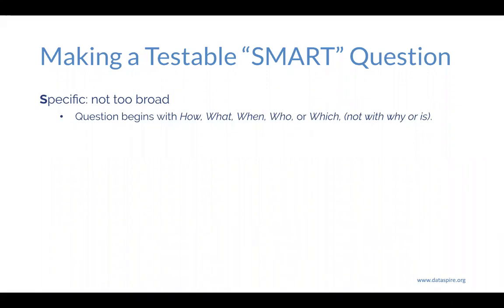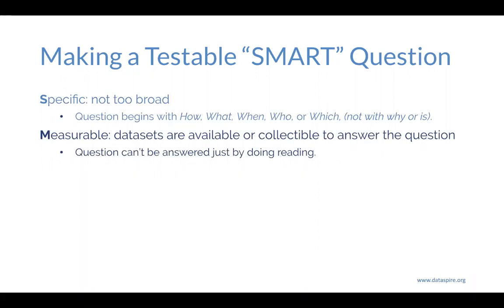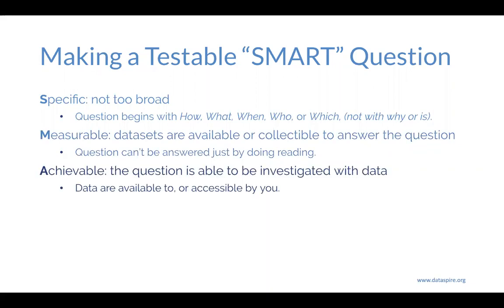I want to take a few moments to remind us all what a SMART question would be. First off, it is Specific — so it's not too broad. Questions that begin with 'how,' 'what,' 'when,' 'who,' or 'which,' rather than 'why' and 'is,' help us center more quickly into a testable question. They're also Measurable — there are data sets available or collectible to answer the question, and the questions can actually be answered by using the data. We have to collect or find those data to answer the question; we can't just read about what somebody else has discovered.